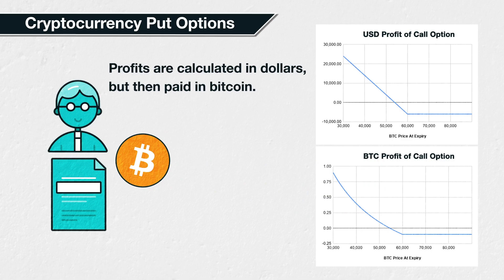So when calculating the profit, we need to subtract the amount of cryptocurrency paid for the option from the amount of cryptocurrency received. For this lecture, we will be using Bitcoin specifically as the cryptocurrency, but this applies equally to Ethereum contracts or any other contract that uses the asset itself as collateral.